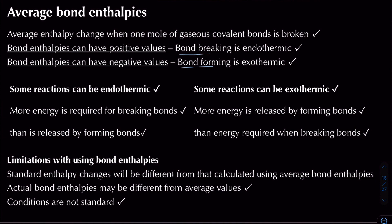Second, the conditions are not standard, because average bond enthalpies refer to gaseous covalent bonds. For example, propan-1-ol is a liquid at room temperature and pressure under standard conditions, which differs from the gaseous form assumed when using average bond enthalpies.